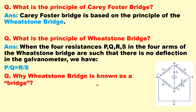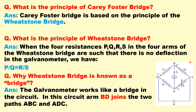Why is the Wheatstone bridge known as a bridge? The galvanometer arm BD works as a bridge for the circuit. This BD is joining the two paths ABD and BCD — these arms or paths are joined by the arm BD, which is the galvanometer arm.